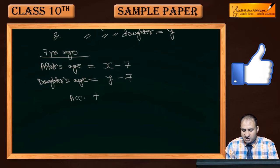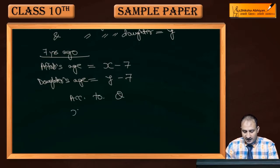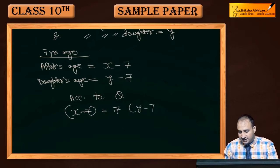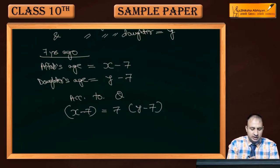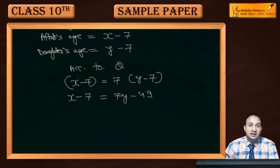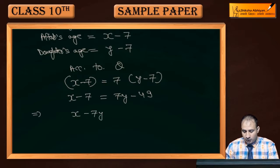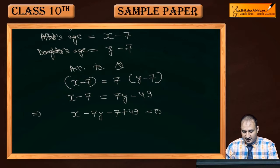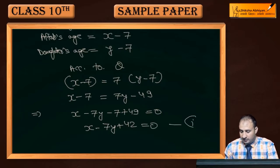According to question, first condition में यह कहा गया है कि Aftaab की age 7 times है अपनी daughter की age से। इसे solve करते हैं: x minus 7 = 7(y minus 7), यानि x minus 7 = 7y minus 49। सारी चीज़ें left hand side पर लाने पर: x minus 7y minus 7 plus 49 = 0, that comes out to be x minus 7y plus 42 = 0। यह first equation बन गई।